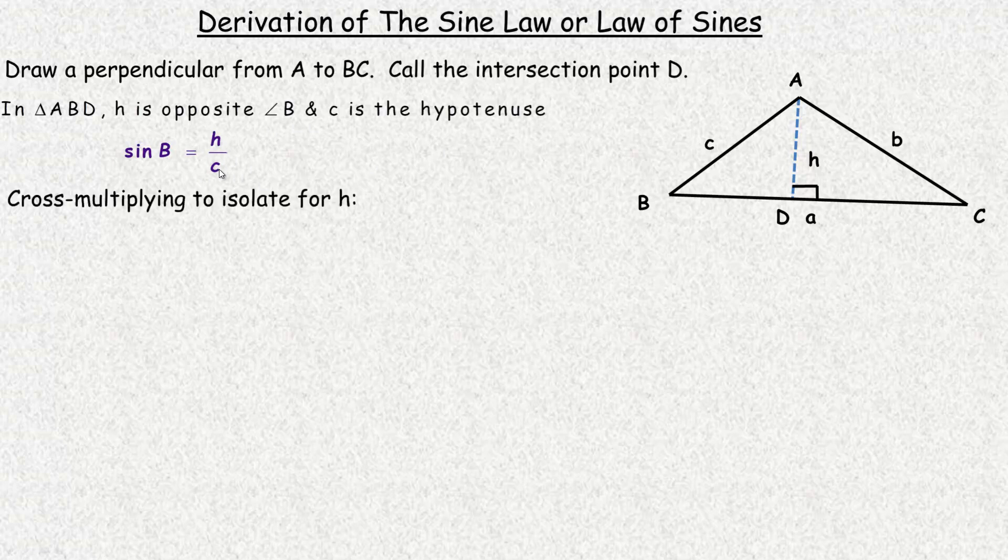Cross multiplying to isolate for H, if you want to think of it this way, remember there's a 1 right here. So H times 1 is H, and that would equal the product of c and sine B. So we're going to call that number 1, just so I can refer to it in a moment later.